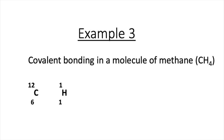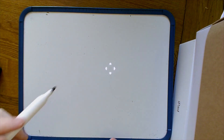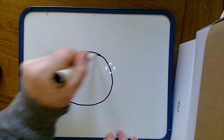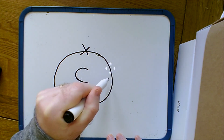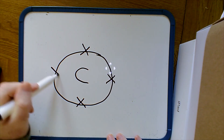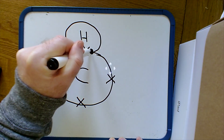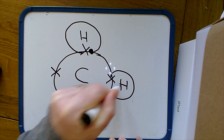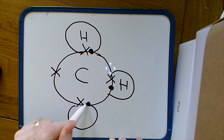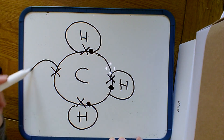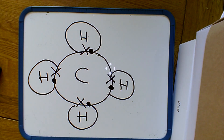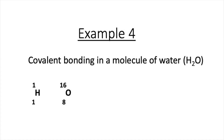In example 3 we look at the covalent bonding in a compound — methane, CH4. Methane contains carbon, atomic number 6, and hydrogen, atomic number 1. When drawing a covalent bonding diagram for a compound I always draw the central atom first, which is carbon. I put the electrons in at 12 o'clock, 3 o'clock, 6 o'clock, and 9 o'clock, showing four unpaired electrons. I then pair each with a hydrogen's one electron, creating four single covalent bonds. Both carbon and hydrogen now have full outer shells.